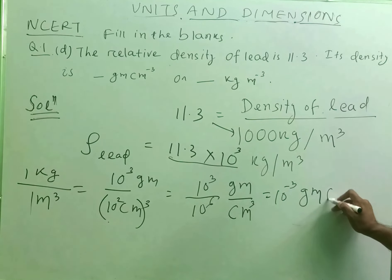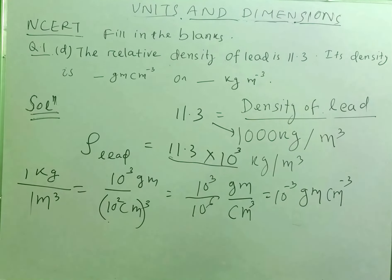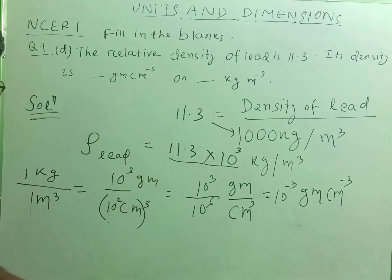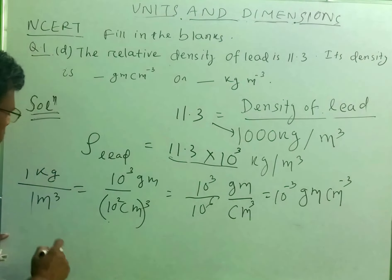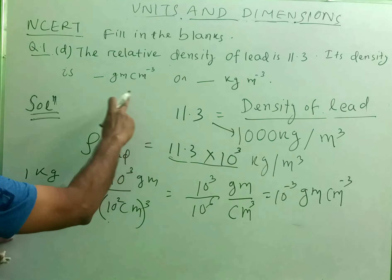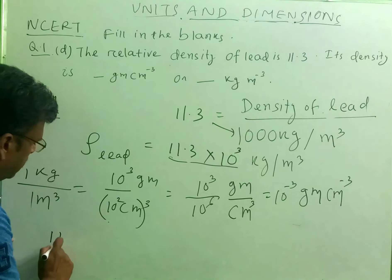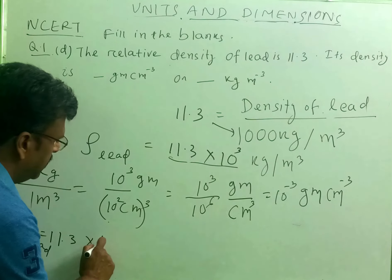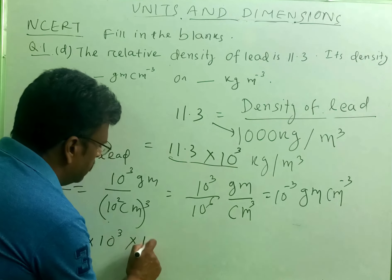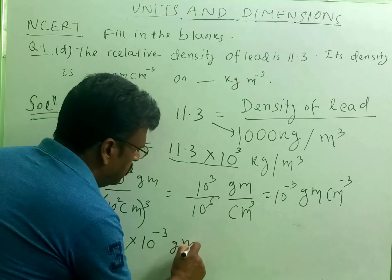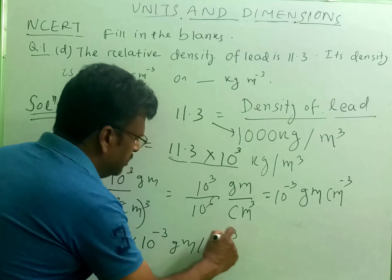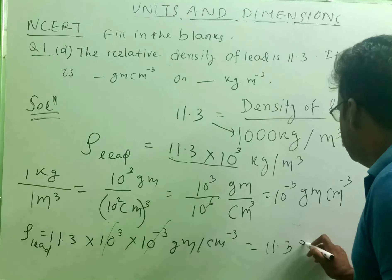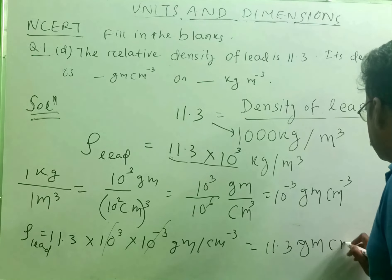So 1 kg per meter cube becomes 10 to the power minus 3 gram per cc, where cc means cubic centimeter. Then the density of lead will be 11.3 into 10 to the power 3 into 10 to the power minus 3 gram per cubic centimeter. The powers of 10 cancel out, and this simply becomes 11.3 g per cc, or 11.3 gram per cubic centimeter.